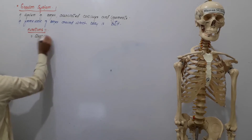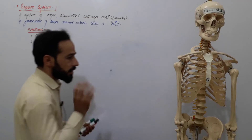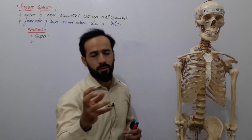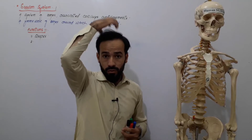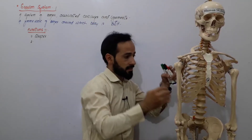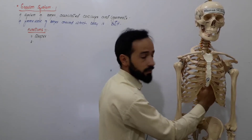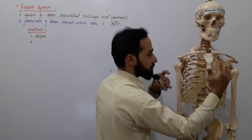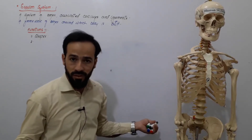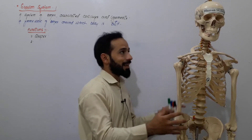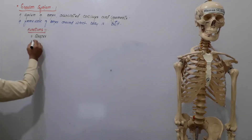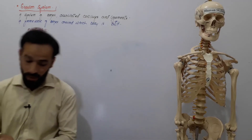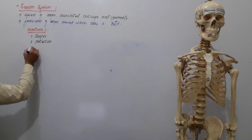The next important function is protection. Inside the cranial cavity, the most delicate part — the brain, the nervous tissue — is well protected by the skull. In the thoracic cavity, the heart, liver, stomach, spleen, and pancreas are all protected by the ribcage, which is made up of bones and cartilages. So the skeletal system protects our vital organs.